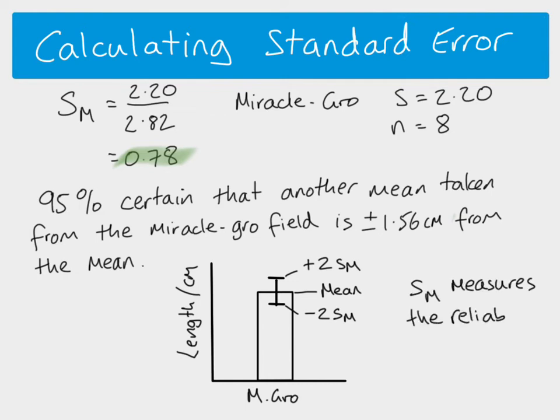Our standard error is measuring the reliability of the mean. We're saying we're 95% confident that even though we've only taken a sample, the true mean falls within this range. The smaller the range is, the more reliable the mean we have calculated, because a smaller range means we're 95% sure the calculated mean is close to the true mean — so smaller range means our data is more reliable.